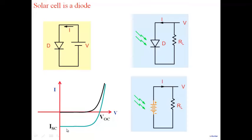We want to derive a new equation for a diode under illumination. We already know the diode equation. What does light do? Light gets absorbed in the P-N junction and generates excess carriers.